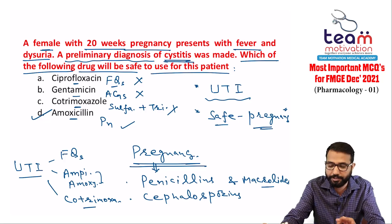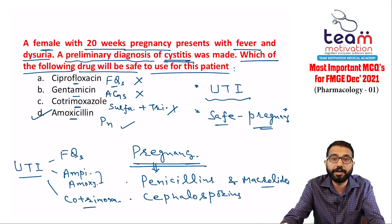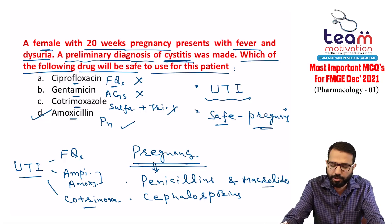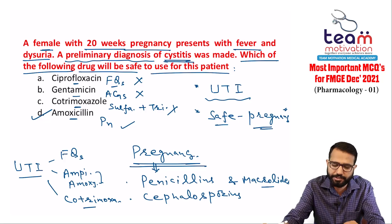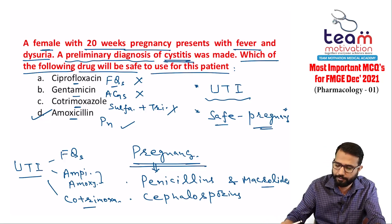In this question, we need a drug safe during pregnancy for UTI. Out of the options, amoxicillin is safe during pregnancy. This is the important takeaway from this question.